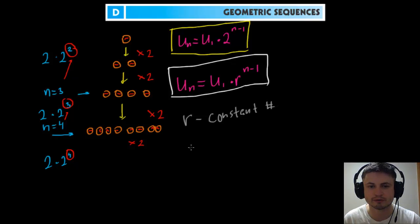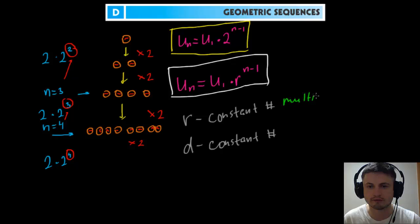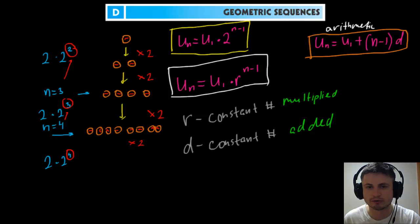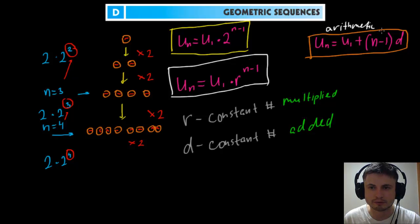If you remember from arithmetic sequences, the constant was called d. It doesn't matter what letter you use, but it's easier to remember with different letters: for geometric sequences it's multiplied by r, for arithmetic it was added with d. To summarize: arithmetic sequences use u1 plus (n minus 1) times d, while geometric sequences use u1 multiplied by r to the power of n minus one. The n minus one represents the position in the sequence, and u1 appears in both.